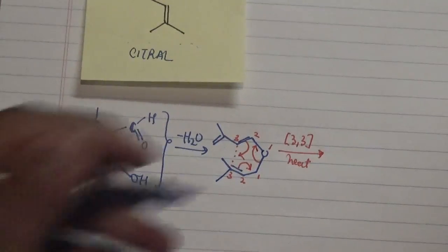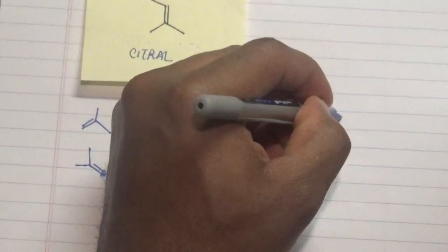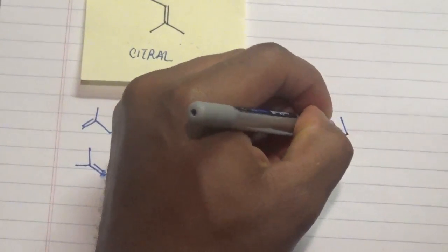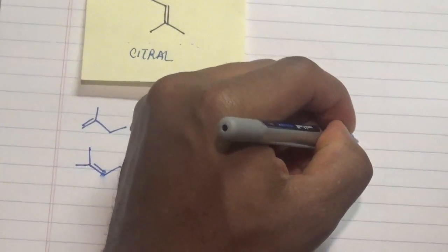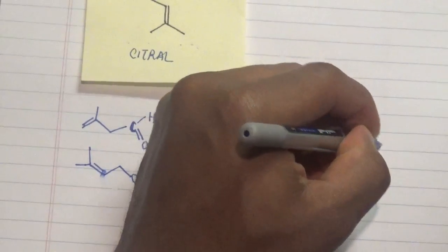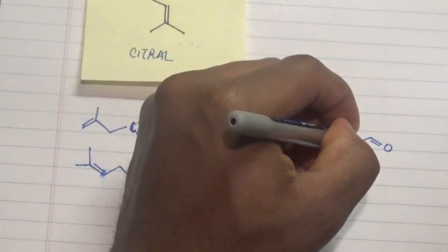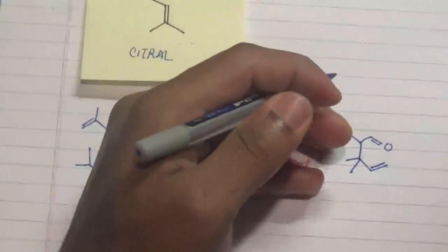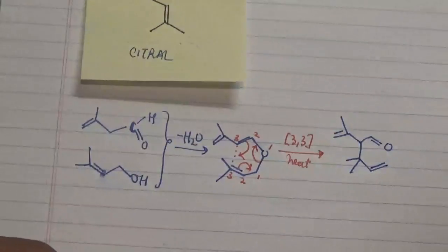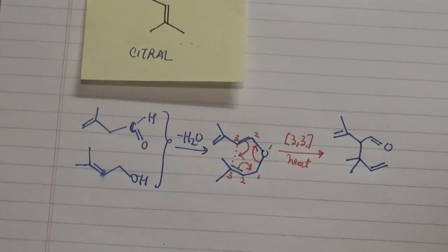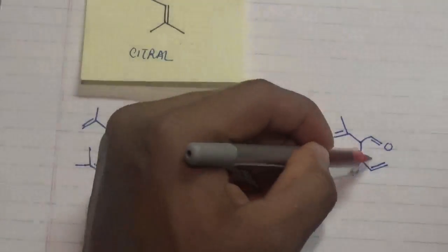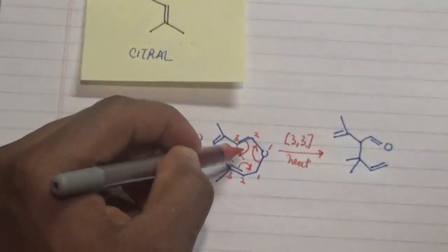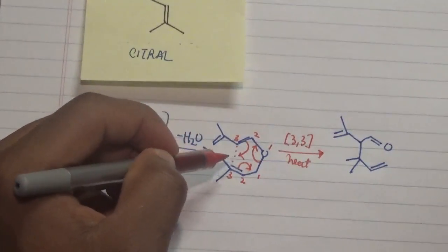What we have is the formation of a pre-intermediate where we have this particular segment being formed and there is an interesting positioning of our double bond with respect to our neighboring double bond.